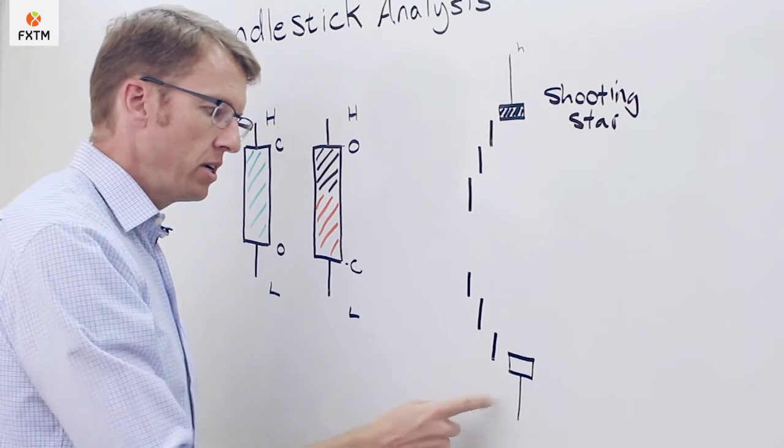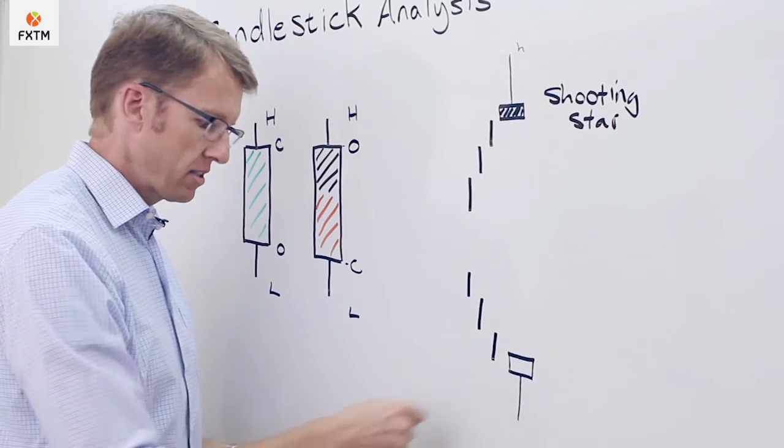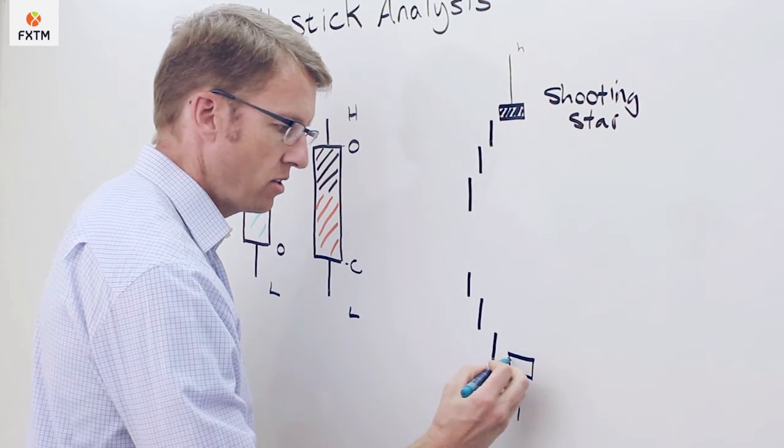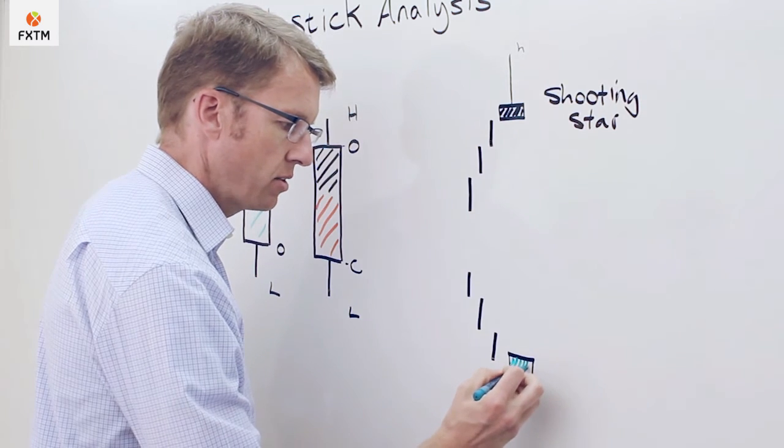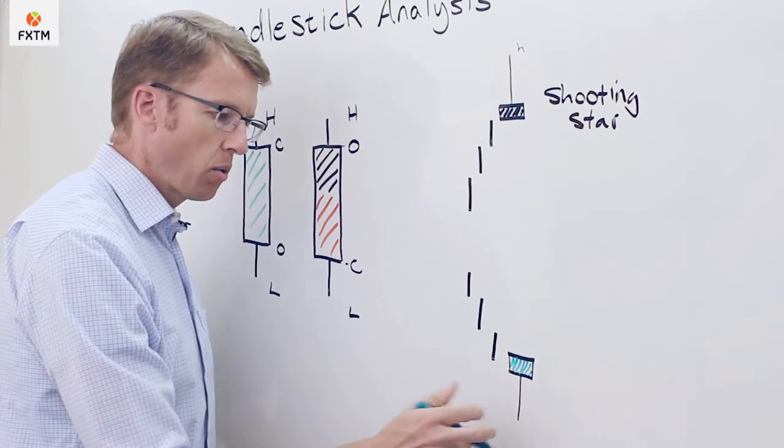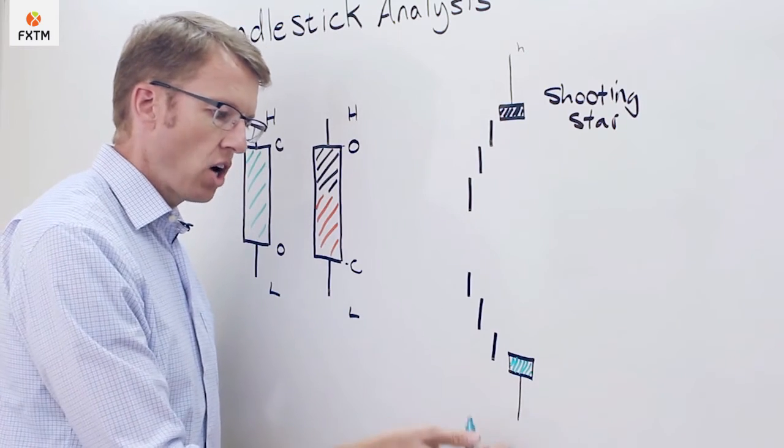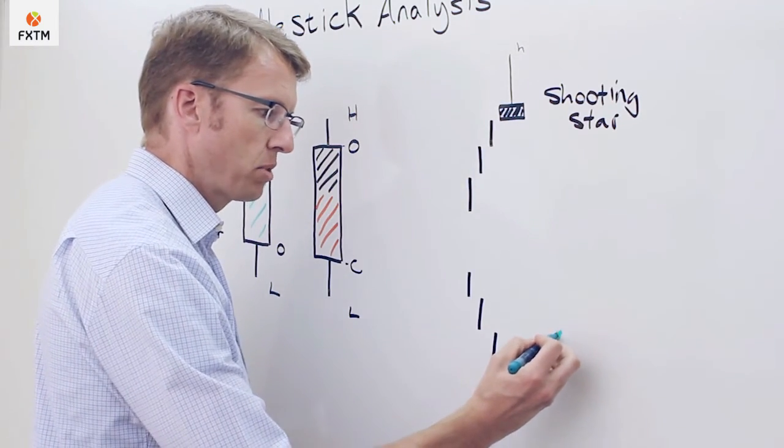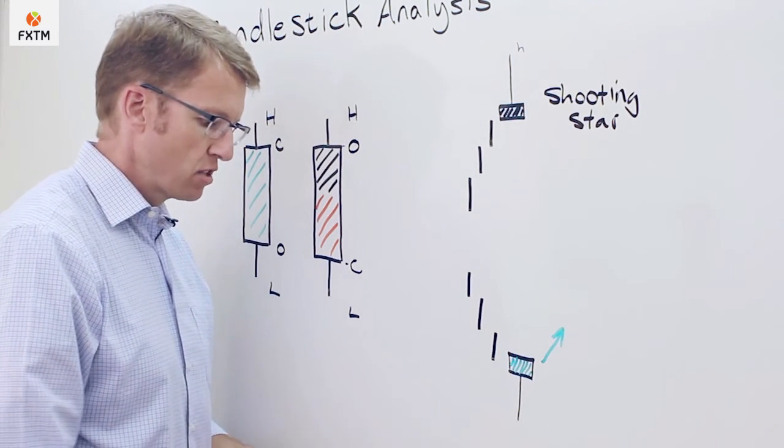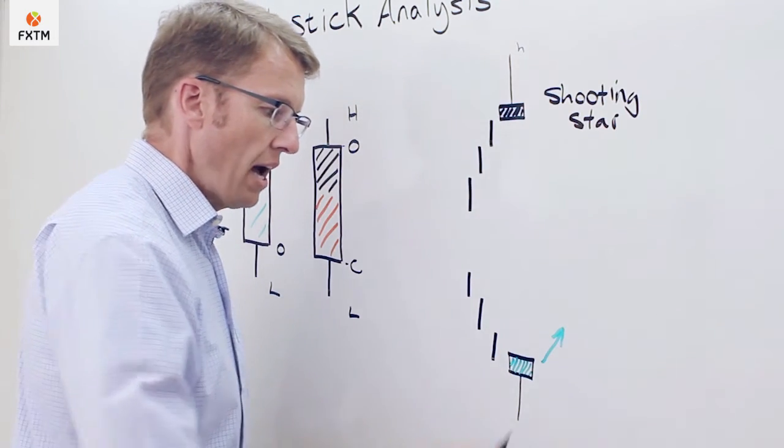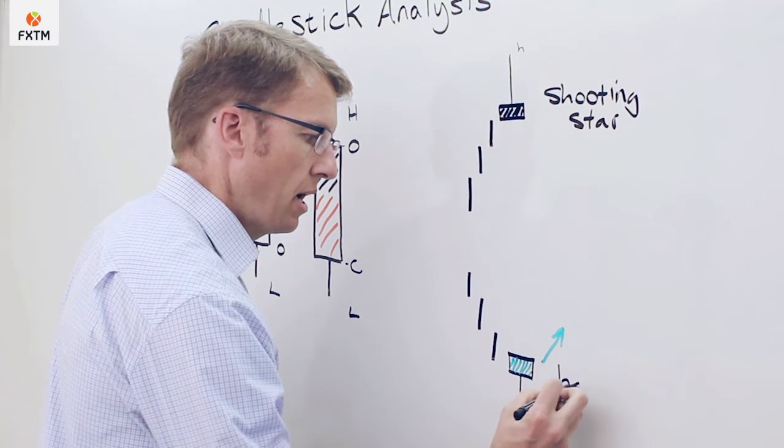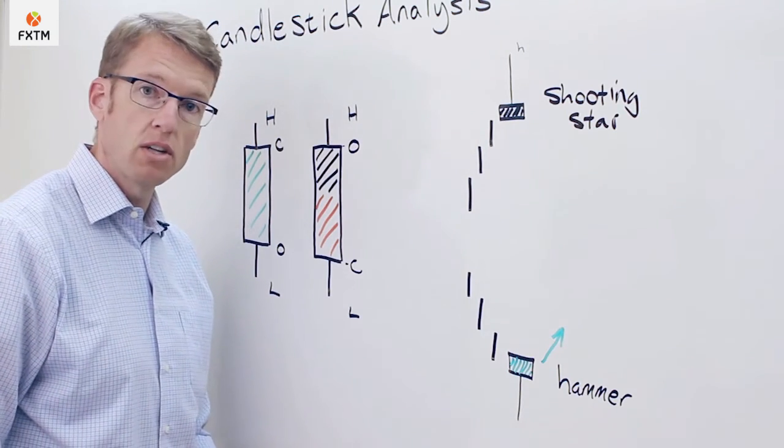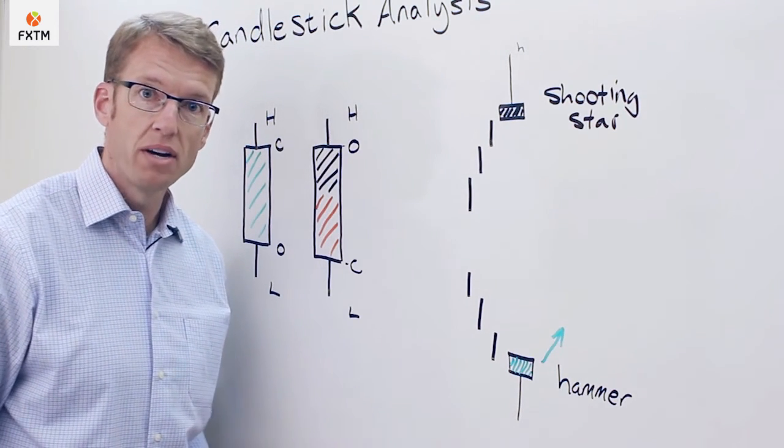A hammer is just the inverse of this. A hammer has a long lower shadow, and here again it doesn't really matter what color the body is—the smaller the better—but that long lower shadow represents an exhaustion of the bears, and we would assume that has bullish implications. So a hammer is bullish, and of course if it appears at support, all the better. A shooting star has bearish implications, which again, if it occurs at resistance, that would be all the better as well.